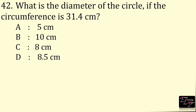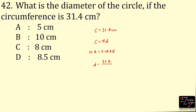What is the diameter of the semicircle if the circumference is 31.4 cm? Circumference is 31.4 cm. Circumference of a circle is π × d: 31.4 = 3.14 × d, so d = 31.4 ÷ 3.14 = 10 cm.